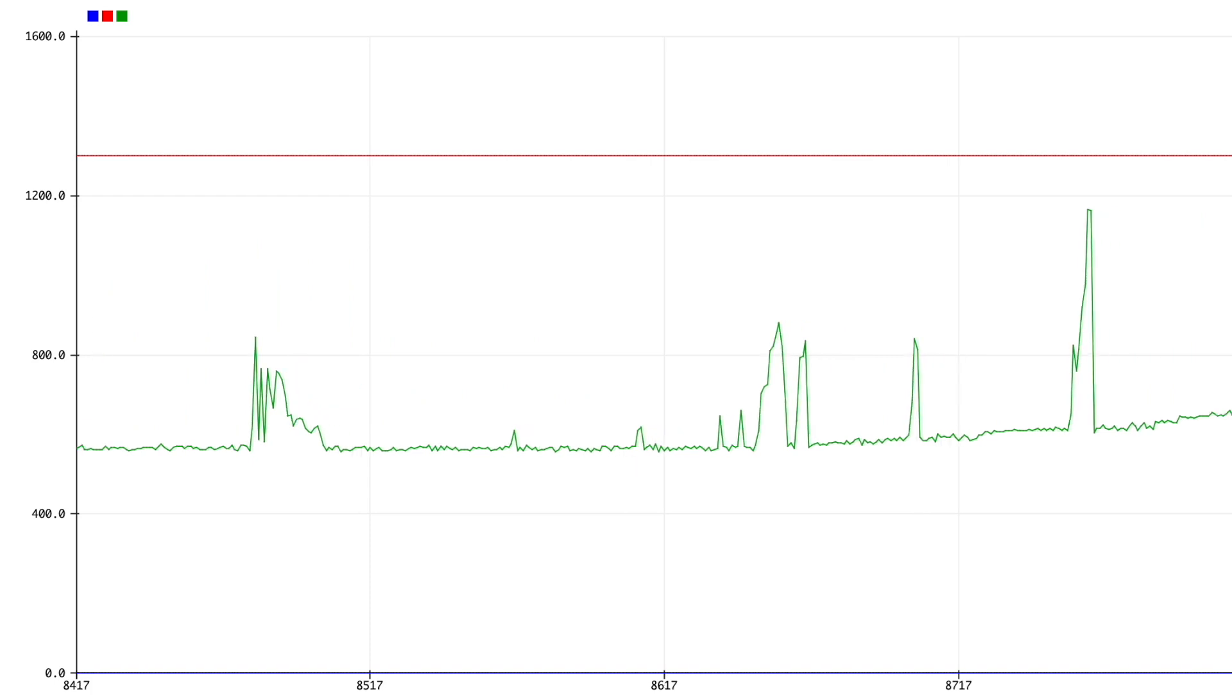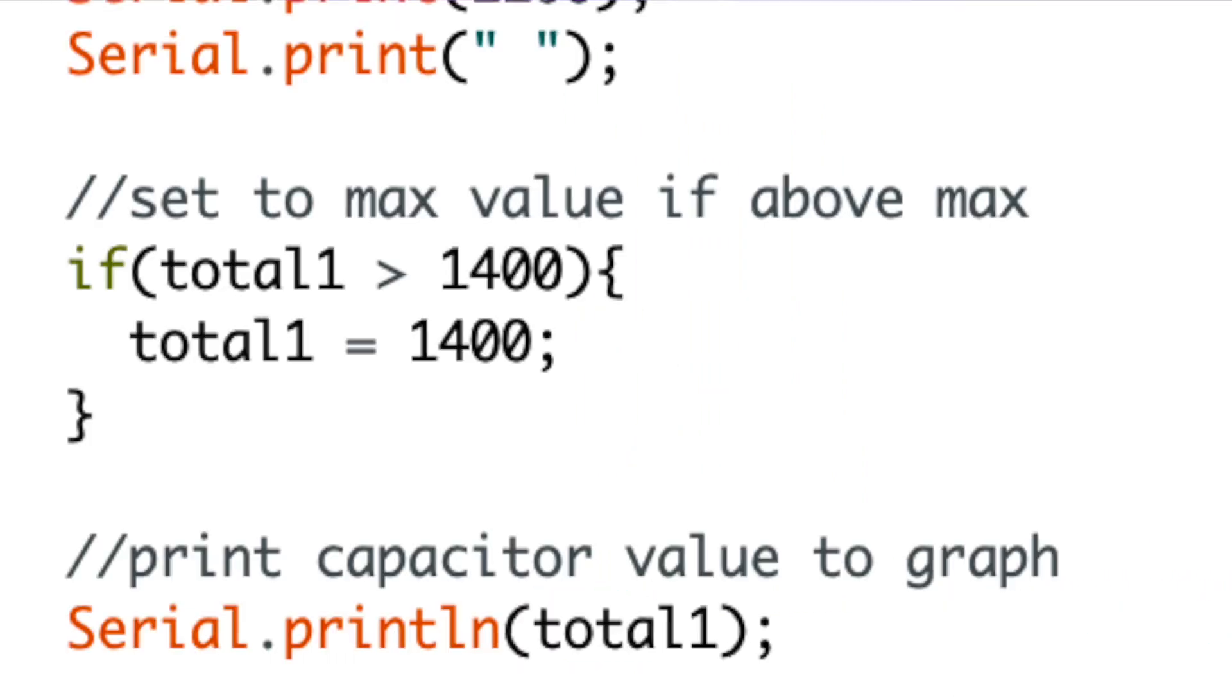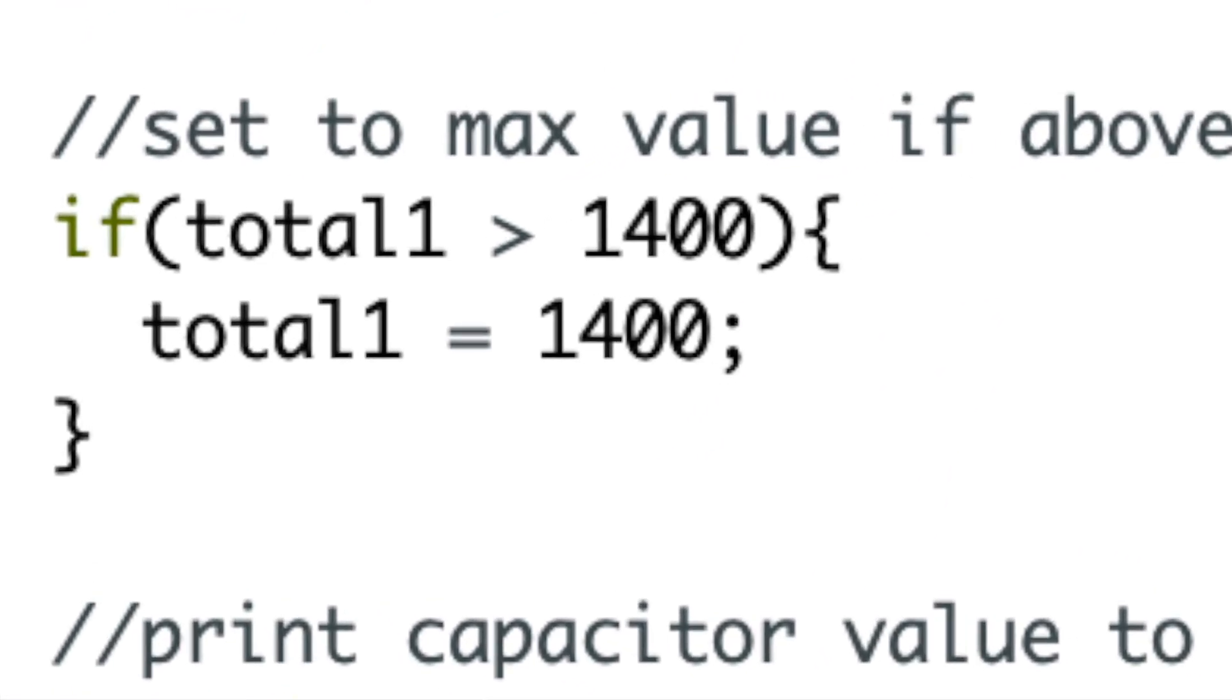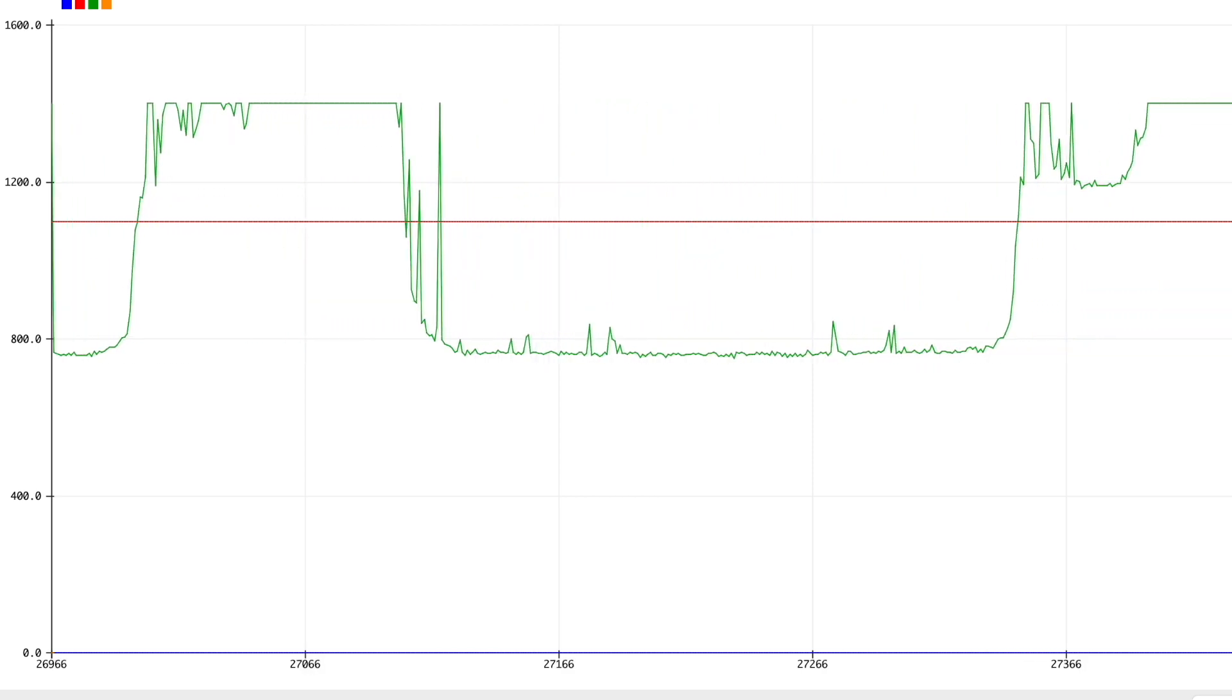To fix this problem, I programmed a maximum sensor value reading, so if the sensor ever picks up a value higher than a set value, the variable would just be set to the max sensor value. This really smoothed out the data, and led to a better working sensor.